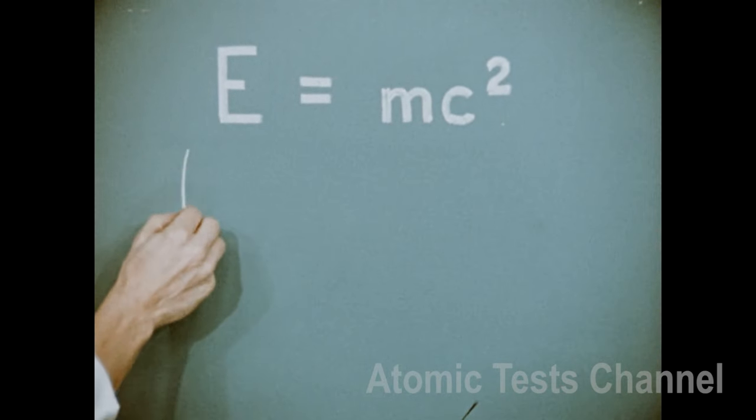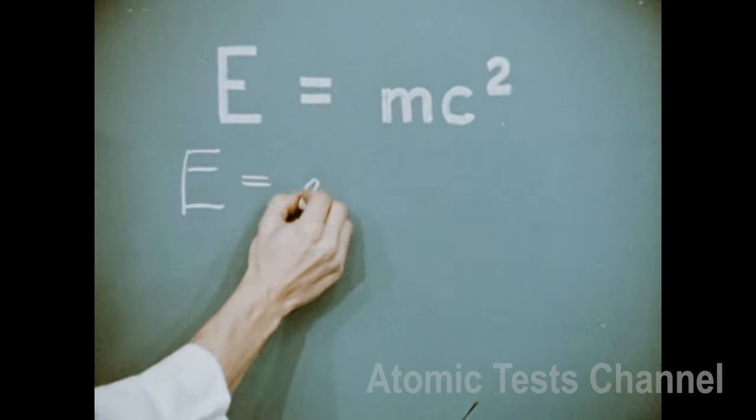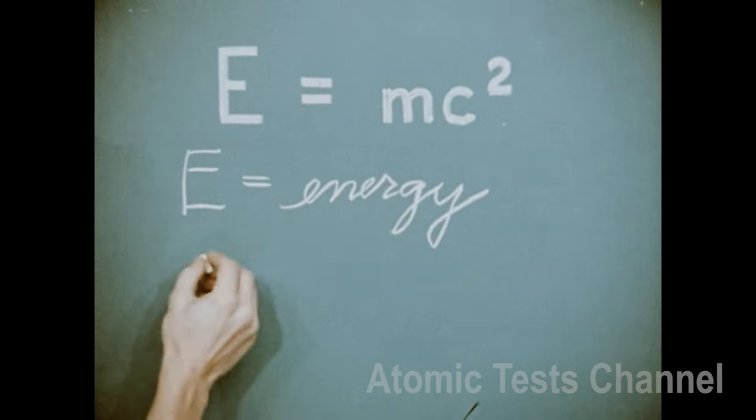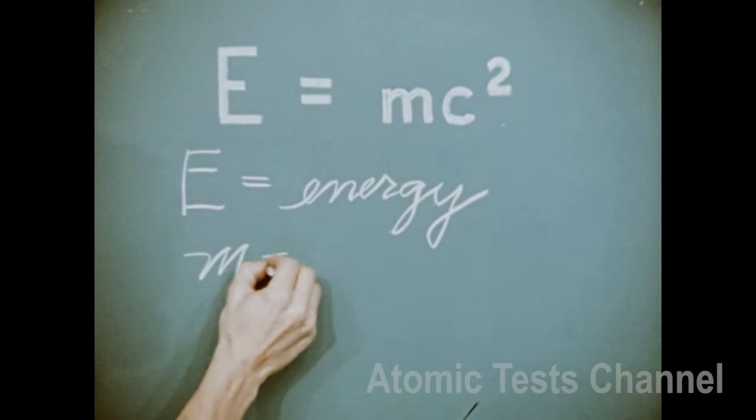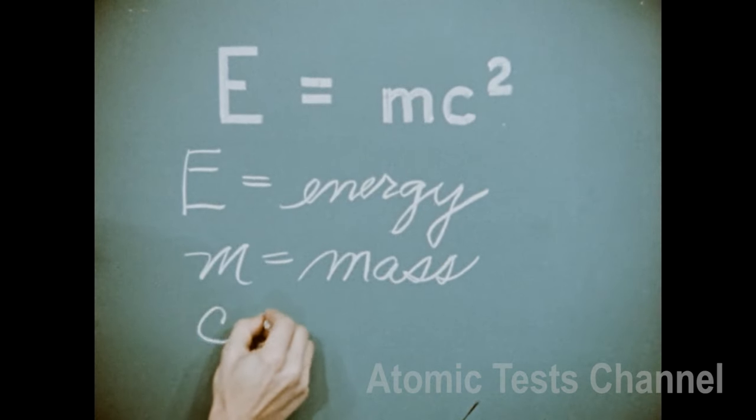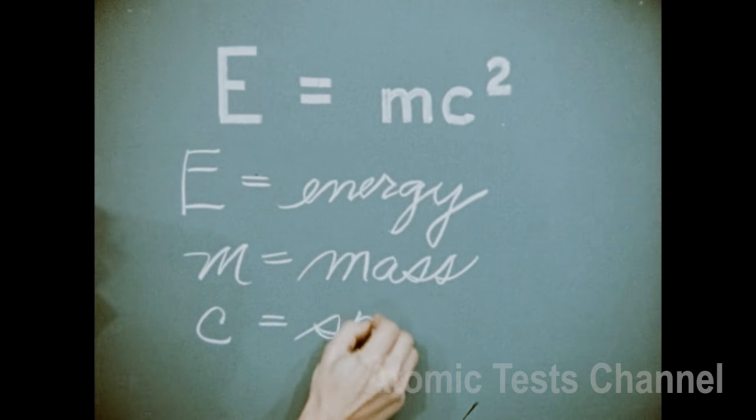In this equation, E is equal to energy, M is equal to mass, and C is equal to the speed of light.